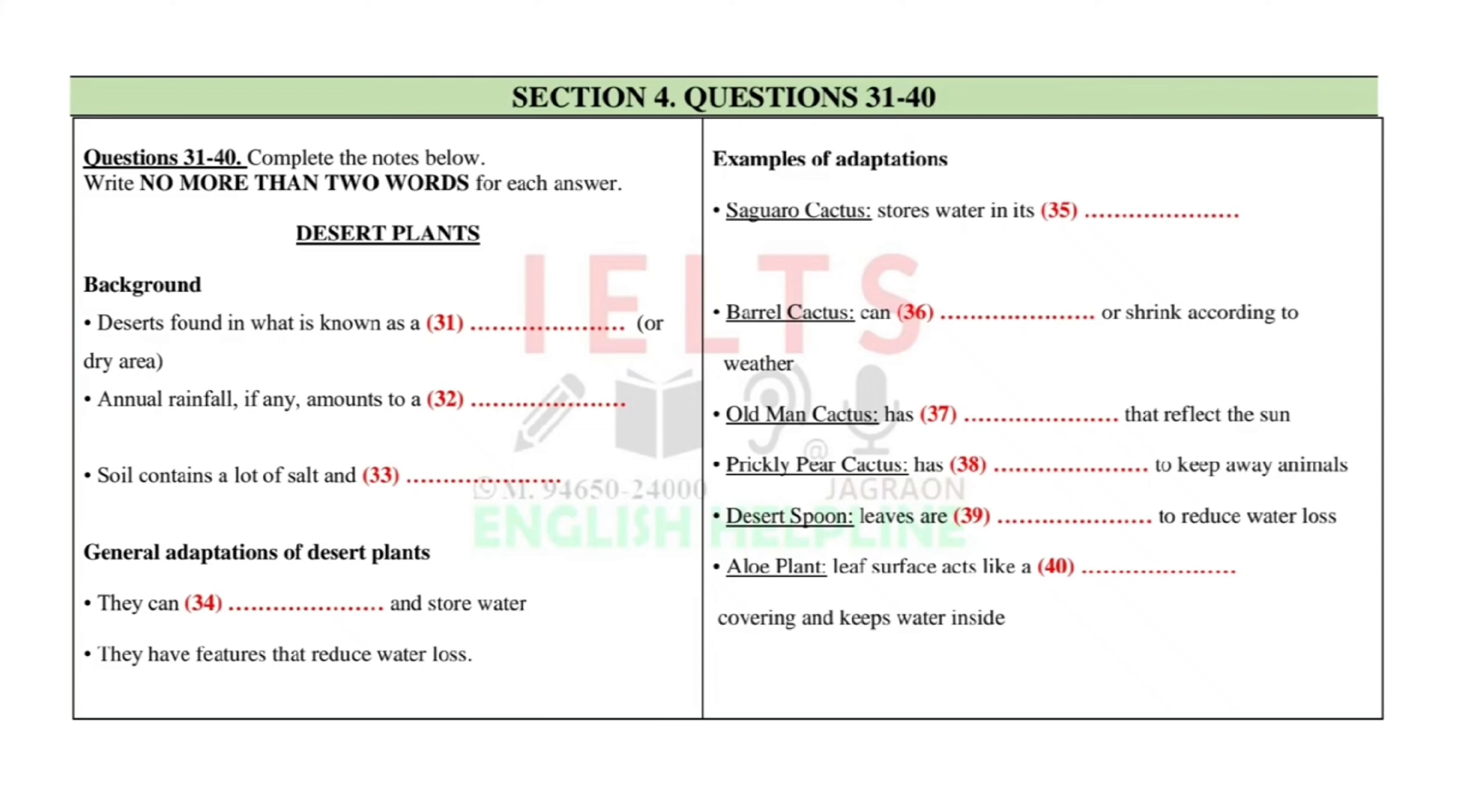Our next plant is called the desert spoon. This plant has long leaves that fan out, and they're very succulent because they can also store water inside. However, they're also usually very tough, and this helps keep the water inside and also makes them less tasty.